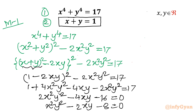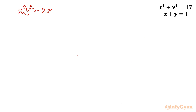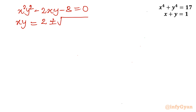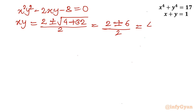This is a quadratic equation in xy. Applying the quadratic formula: xy = (2 ± √(4 + 32)) / 2 = (2 ± √36) / 2 = (2 ± 6) / 2. So xy = (2 + 6)/2 = 4, or xy = (2 − 6)/2 = −2.